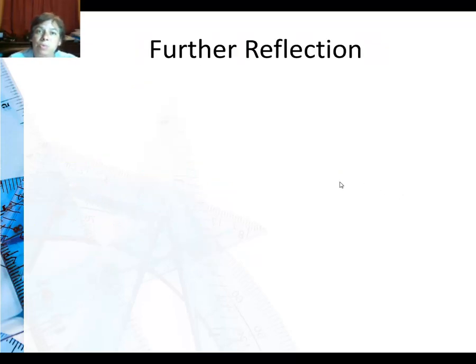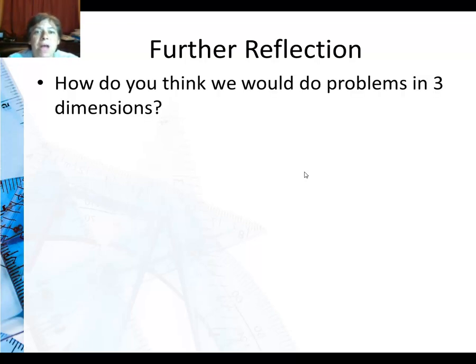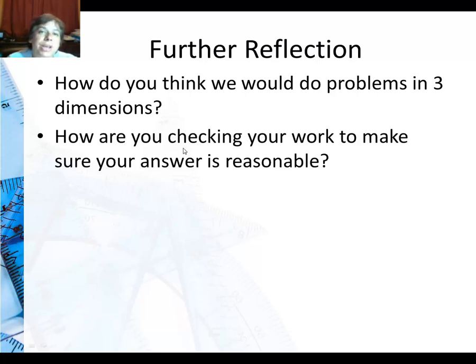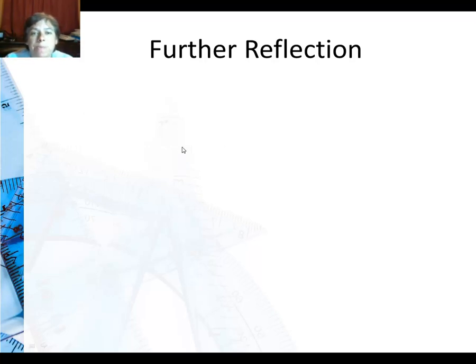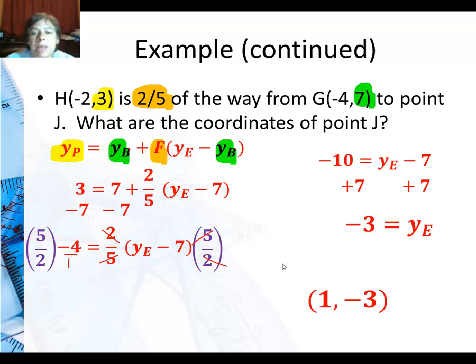So you do the individual practice on your own. Same way, you're going to have to do x-coordinate first, y-coordinate second. So how do you think we would do problems in this case in three dimensions if we had a z-coordinate? And how are you checking your work to make sure your answer is reasonable? So if I were to go back to my answer here, negative two needs to be between negative four and one, and it is. So at least I'm on the right side. Three needs to be between seven and negative three, and it is.